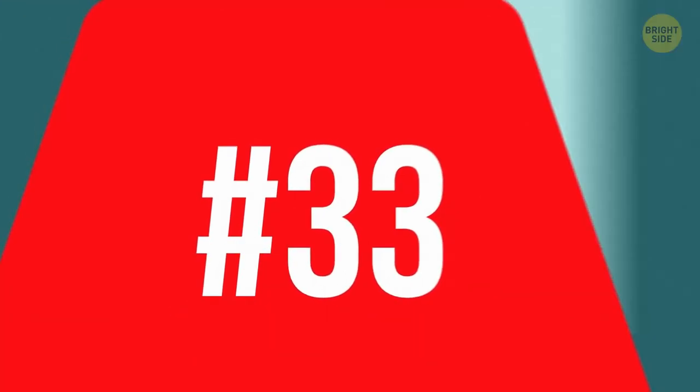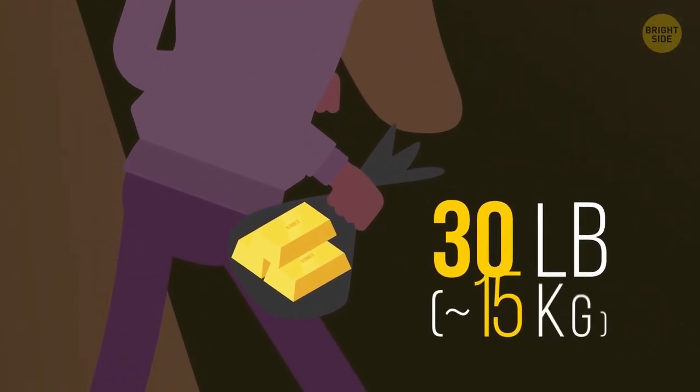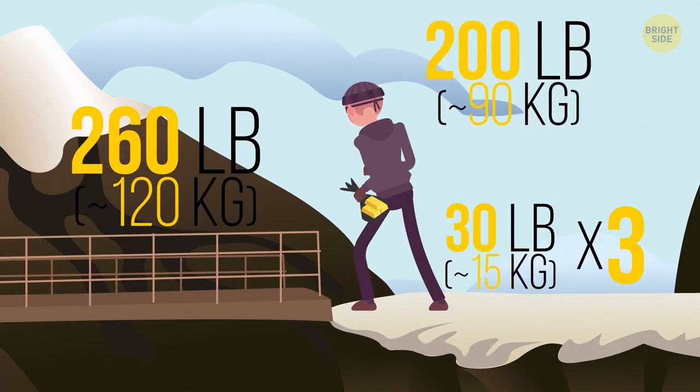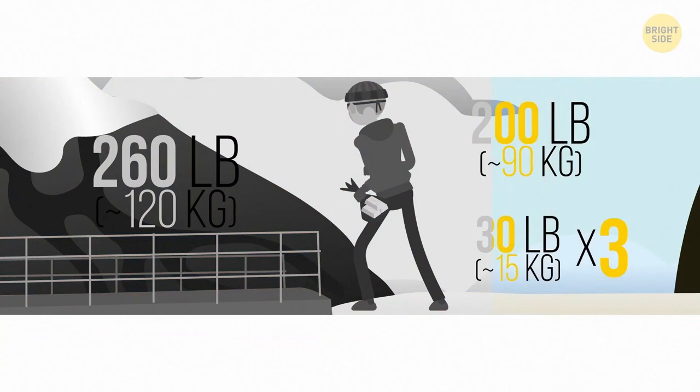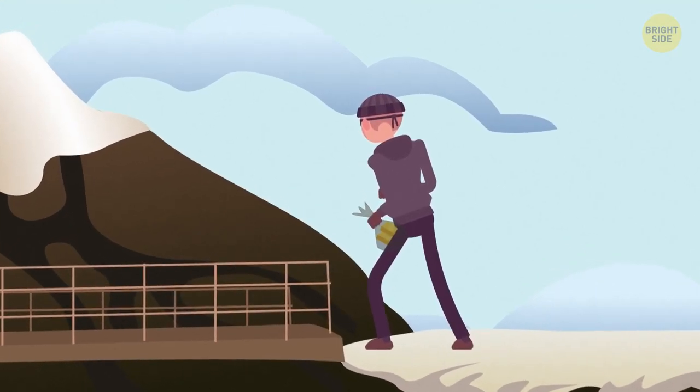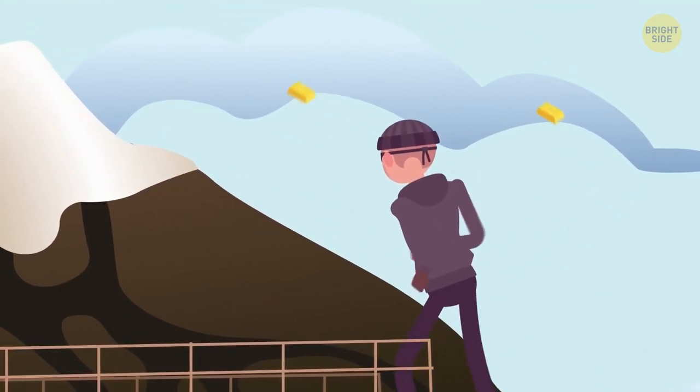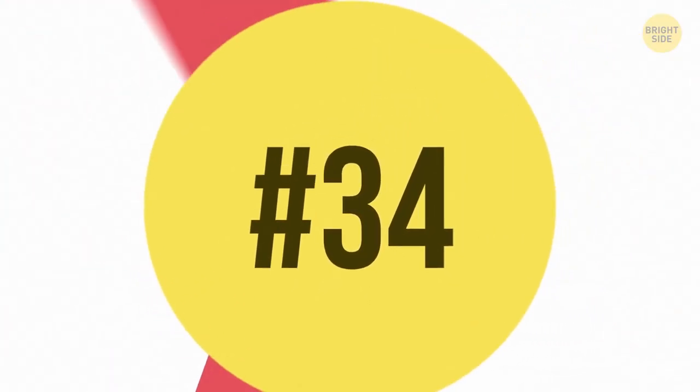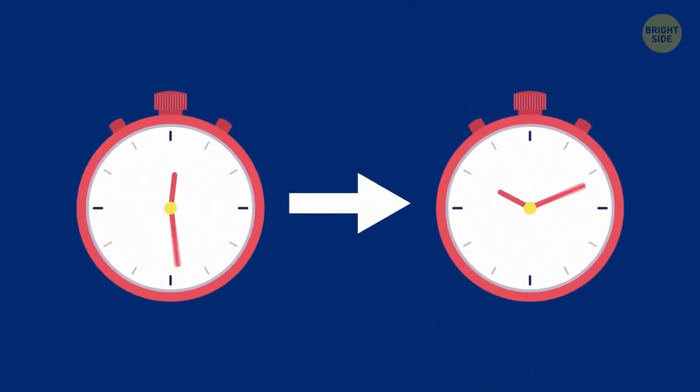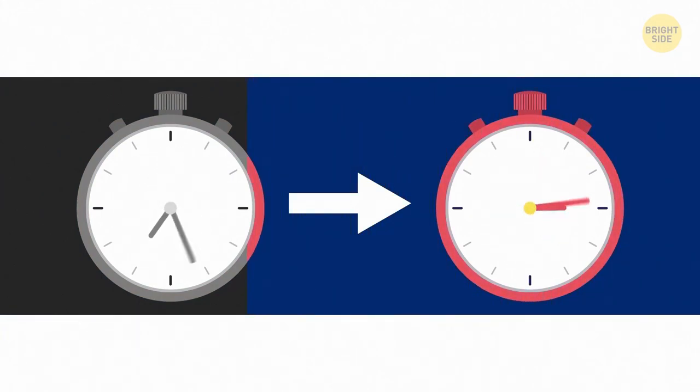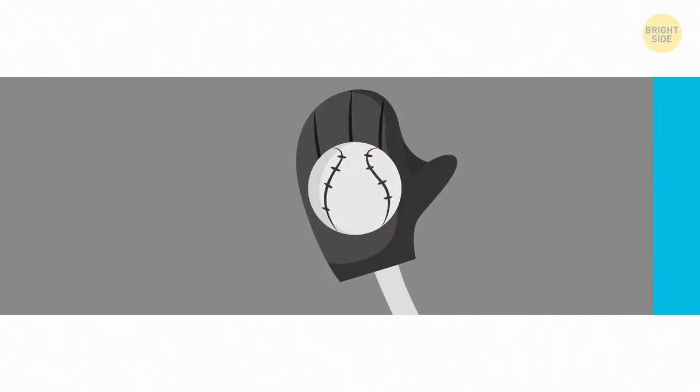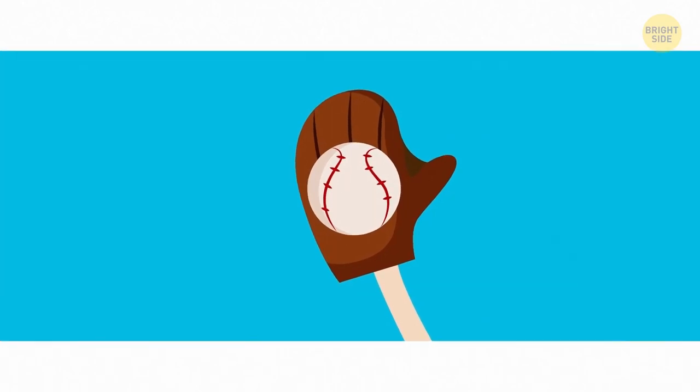33. A man is on the run from the police after he stole 3 massive gold bars weighing 30 pounds each. At some point, he reaches a long, fragile bridge that can support only 260 pounds. The man weighs 200 pounds. How can he transport all 3 gold bars? He has to walk across the bridge while juggling the bars. It means that at any time, only 2 bars will be on the bridge since the third one will always be airborne. 34. Which English verb changes its tense to the past by simply rearranging its letters? Eat. Its past form is ate. 35. What can you catch but not throw? No. A cold.